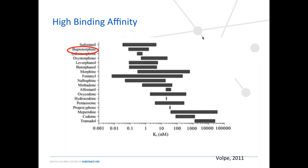Buprenorphine also has a high binding affinity — how tightly it binds to the receptor relative to other opioids. On average, buprenorphine is among the highest in binding affinity. Sufentanil and fentanyl potentially have even higher binding affinity and could bind to the receptor even when buprenorphine is present. However, for most other opioids — morphine, oxycodone, codeine — those have a much lower binding affinity, so buprenorphine will push them off the receptor. Hydromorphone also has a significantly high binding affinity, just below buprenorphine, so it could be a potential agent to reduce precipitated withdrawal symptoms.